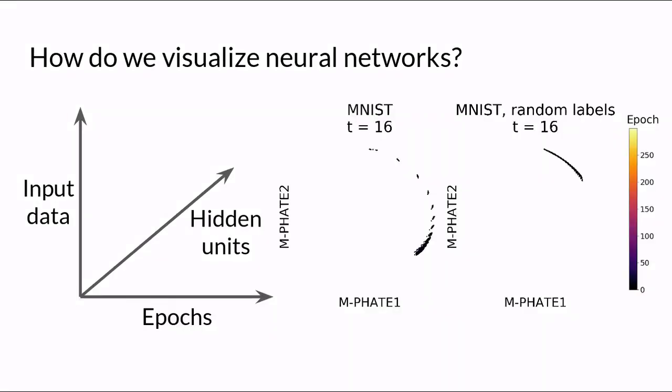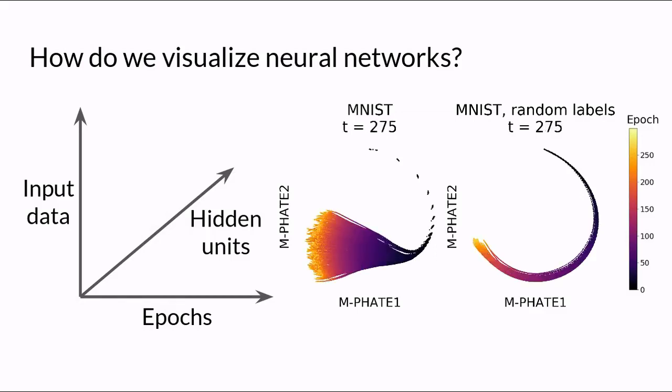In this paper, we present multi-slice FATE, or MFATE, a visualization of network hidden state dynamics as a function of input data and time. Each point in the visualization represents a single hidden unit at a single epoch, and as a result, we obtain a dynamic and global view of the network's learning process.